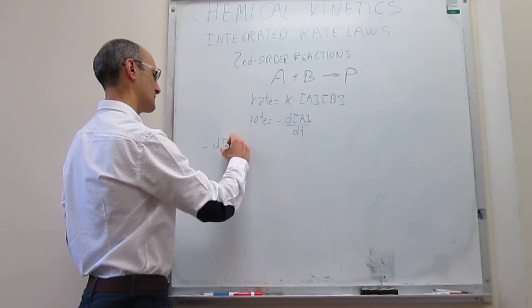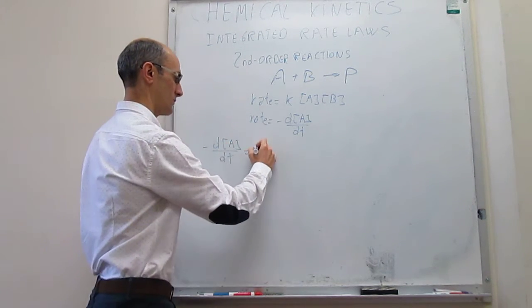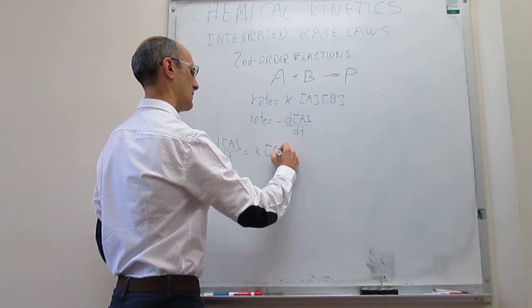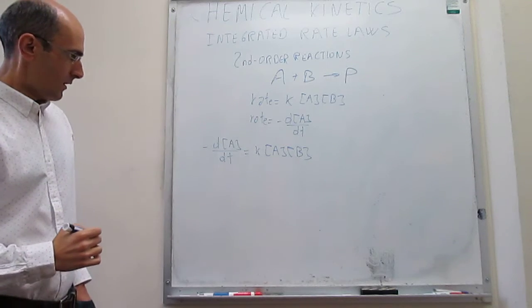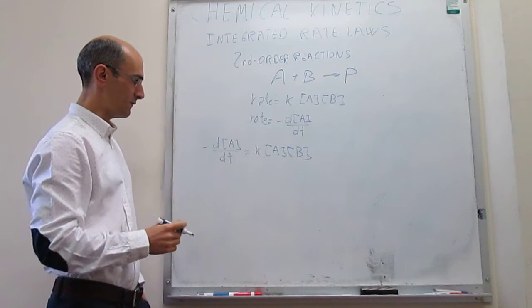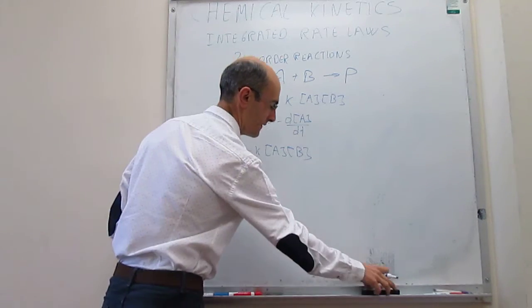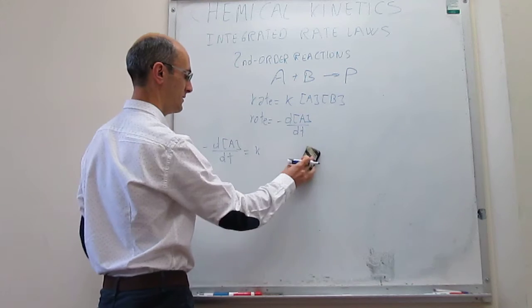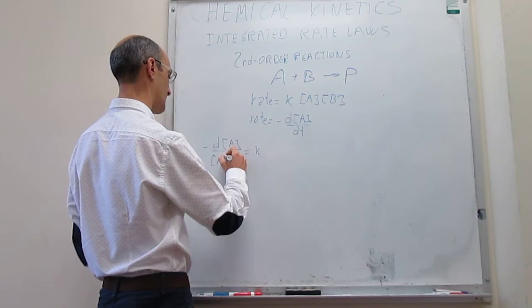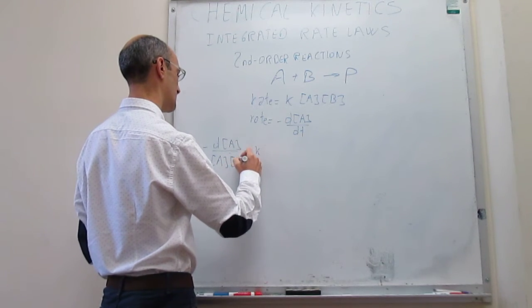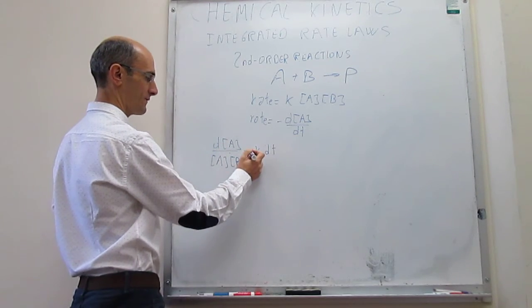Minus the differential of the concentration of A over time as a function of time is equal to K concentration of A times concentration of B. So much as we have done in the last few videos we will aggregate terms so that concentrations are on the left-hand side and then time is on the right-hand side. So we can turn this into the following: dA over concentration of A times concentration of B equals minus K differential of T. And we can switch signs for convenience.